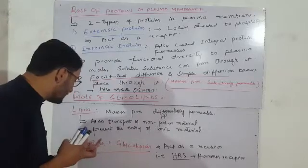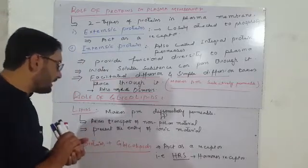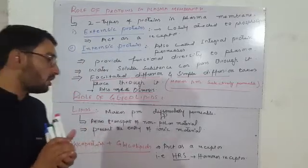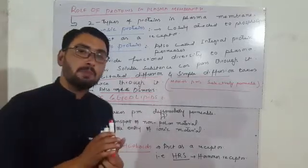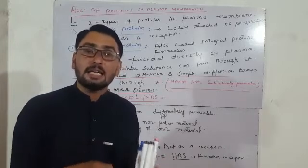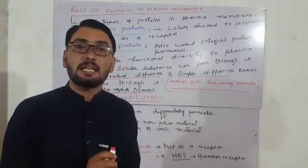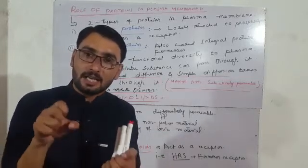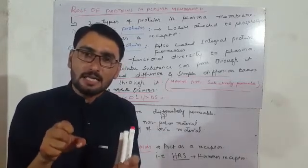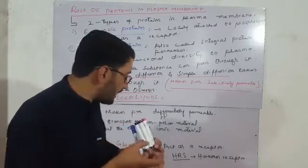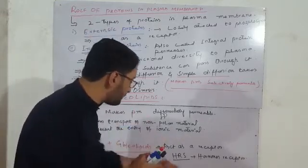Certain glycolipids and glycoproteins act as receptors in the plasma membrane. They are important for the recognition of other cells and also serve as hormone receptors.